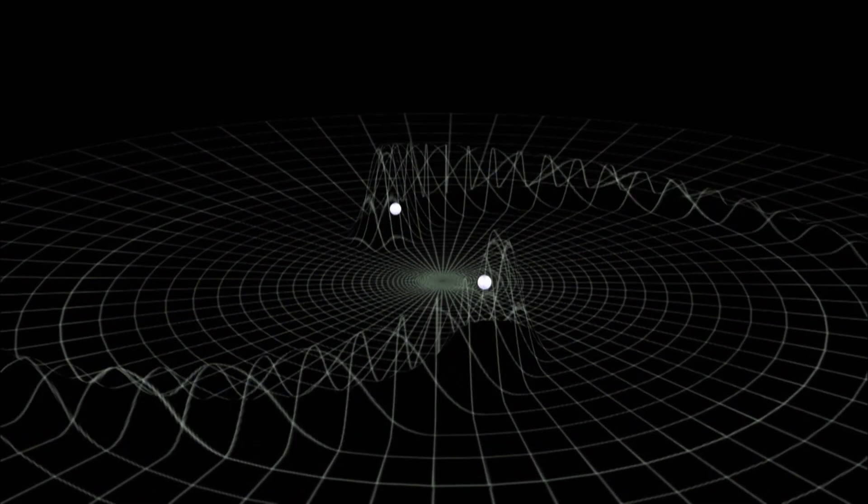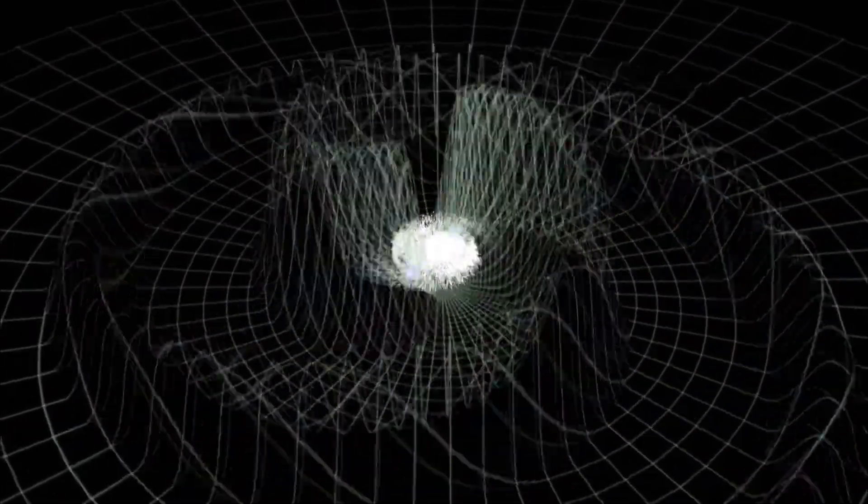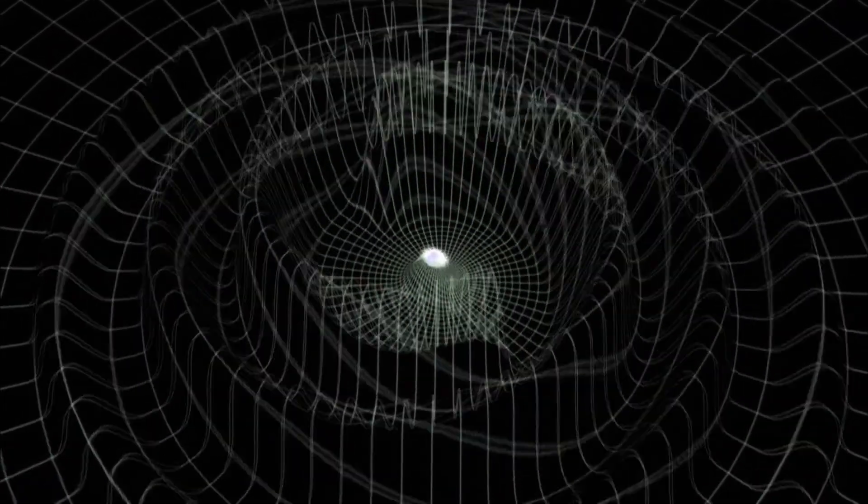Albert Einstein showed how they do it. He predicted that when massive bodies accelerate, or whip around each other, they can stir up the normally smooth fabric of space-time.